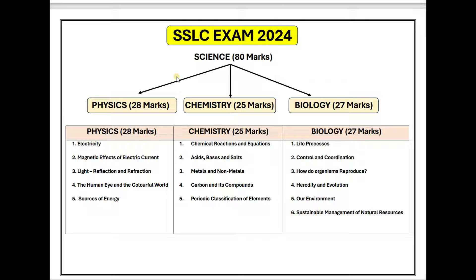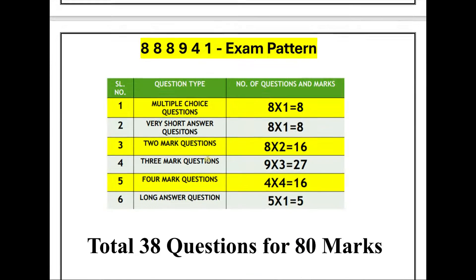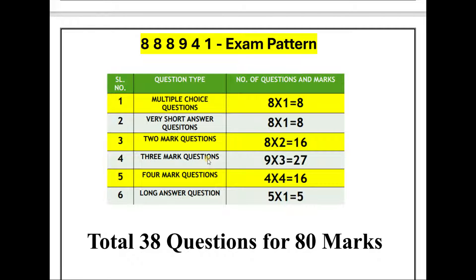The marks allotment is: Physics 28 marks, Chemistry 25 marks, and Biology 27 marks. The 888941 exam pattern means: eight MCQs, eight one-mark questions, eight two-mark questions, nine three-mark questions, four four-mark questions, and one five-mark question. The five-mark question can be from Biology, Chemistry, or Physics.